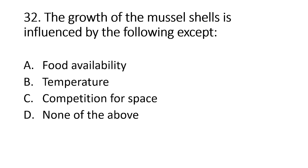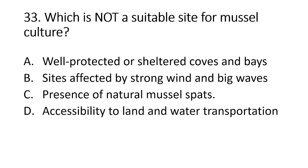Number 32. The growth of the mussel shells is influenced by the following except: A. Food availability. B. Temperature. C. Competition for space. D. None of the above. The answer is letter D, none of the above. The growth of mussel can be affected by the presence of food, temperature, and density among others. Number 33. Which is not a suitable site for mussel culture? A. Well-protected or sheltered coves and bays. B. Sites affected by strong wind and big waves. C. Presence of natural mussel spats. D. Accessibility to land and water transportation. The answer is letter B, sites affected by strong winds and big waves are not suitable for mussel culture.